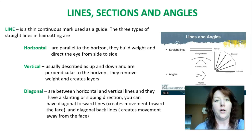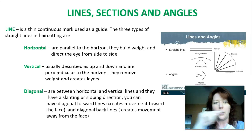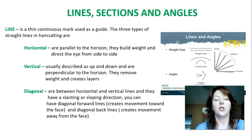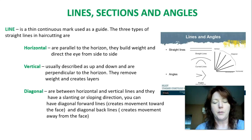Lines, sections, and angles: it's really important to understand the difference between a line, a section, and an angle. A line is a thin continuous mark used as a guide. There are three types of straight lines: horizontal, which is parallel to the horizon and builds weight directing the eye side to side; vertical, which runs perpendicular to the horizon, removes weight, and creates layers; and diagonal, which is between horizontal and vertical with a slanting direction — diagonal forward or diagonal back — creating movement around the face.